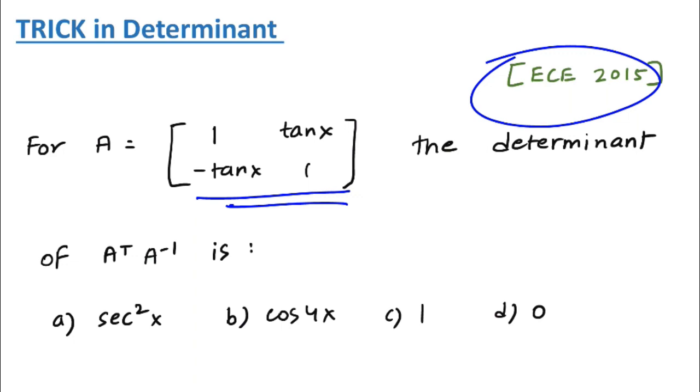For A equals this matrix, the determinant of A transpose into A inverse is equal to what? Option a: sec²x, option b: cos⁴x, option c: 1, or else option d: 0. Pause the video and think what is the solution.